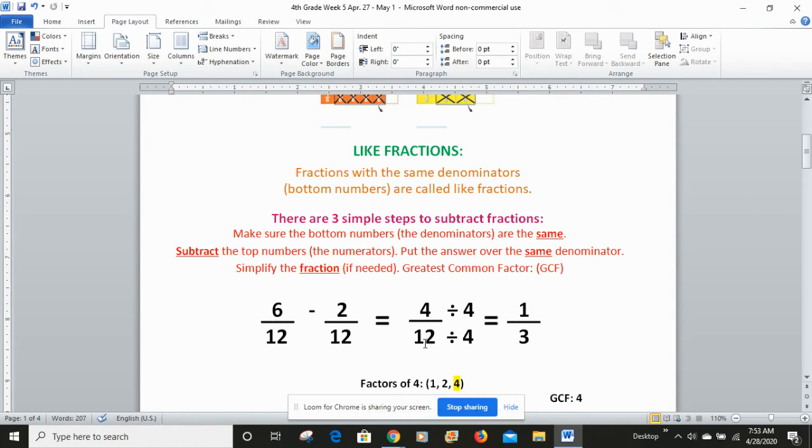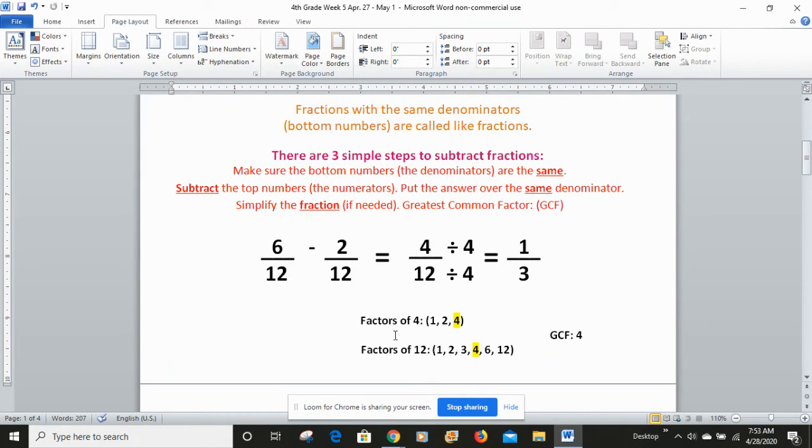And then I ask myself, is 4/12 in lowest terms? How do I know? No, I write out the factors. So the factors of 4 are 1, 2, and 4. Factors of 12 are 1, 2, 3, 4, 6, and 12. And you can see they share some common factors: 1, and 2, and 4.